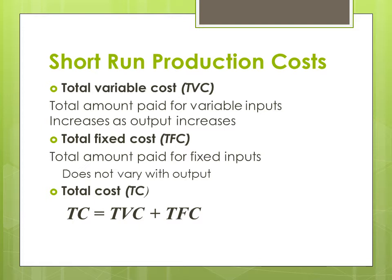Next is total fixed cost. The total amount paid for fixed inputs doesn't vary with output. Total fixed costs don't vary as output varies — expenditures are fixed. For example, you spend money on land only one time, and it is up to you whether you achieve any output from it or not, because land expenditures are fixed.